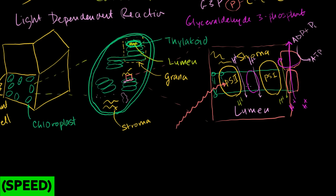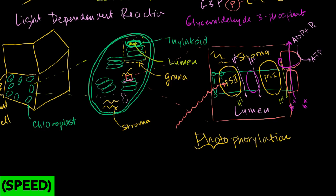This process is called photophosphorylation. We're using photons — that's the photo part — to excite electrons in chlorophyll. As those electrons get passed from one electron acceptor to another, they enter lower and lower energy states, and that drives pumps that allow hydrogen protons to go from the stroma to the lumen.